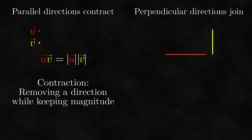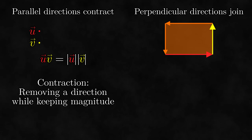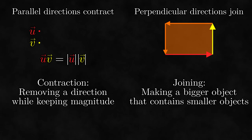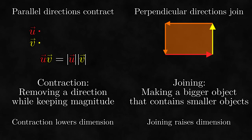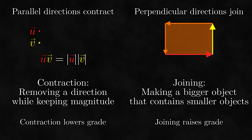When we have two perpendicular vectors, the geometric product is the bivector that the two vectors make. We can think of this bivector as being the original two vectors joined together, so we call this process joining. In general, joining is the process of taking two objects and producing a bigger object containing both of them. Notice that contracting and joining are dual operations: contraction lowers the dimension of the objects while joining raises the dimension. Using grade terminology, contraction is a grade-lowering operation while joining is a grade-raising operation.